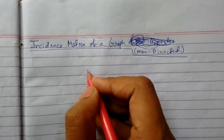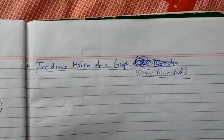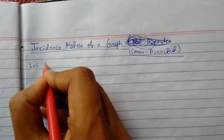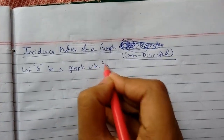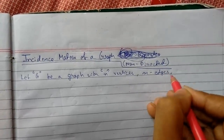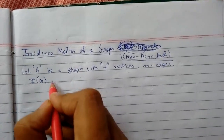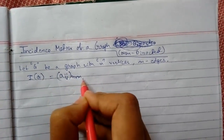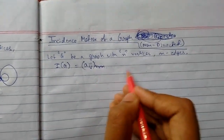Welcome back guys, today we will be continuing graph theory. We will be seeing the incidence matrix of a graph — specifically for an undirected or non-directed connected graph. Let G be a graph with n vertices and m edges. The incidence matrix is denoted by I of G, and it is an n cross m matrix — n for rows (vertices) and m for columns (edges).